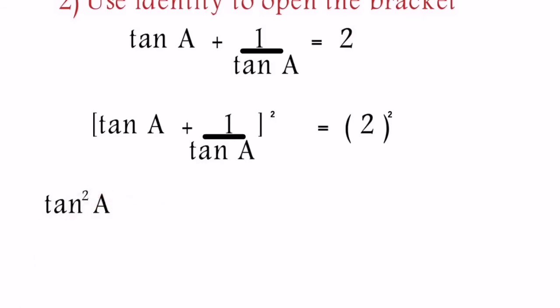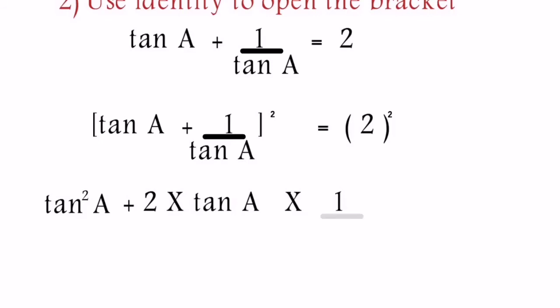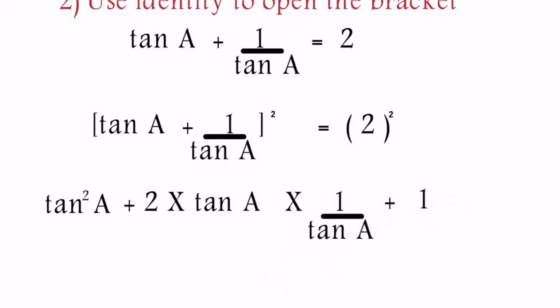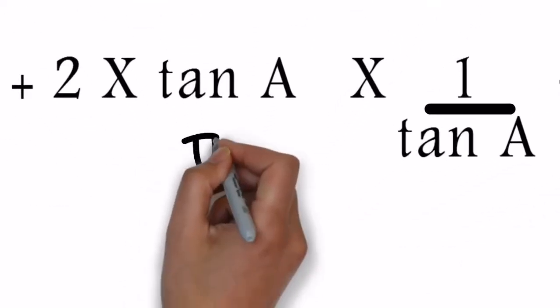And that identity is (a + b)² that gives the result tan²A + 2 × tan A × 1/tan A - that is 2 × a × b - and then third term as 1/tan²A. And after the equality we have 2² as 4.